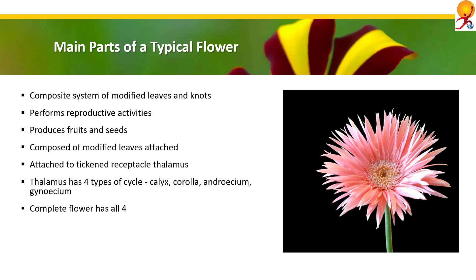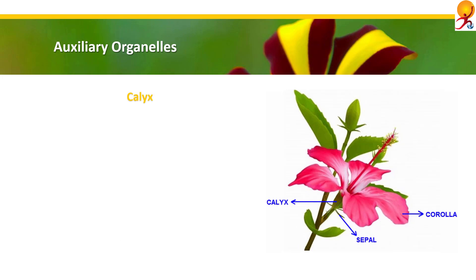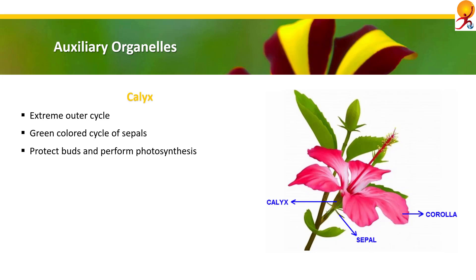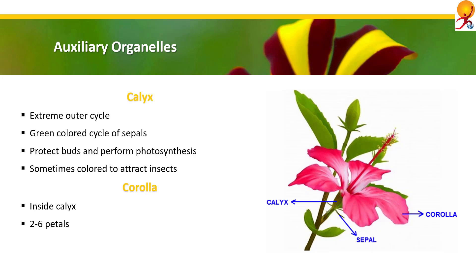The organs calyx and corolla are called auxiliary organelles, while androecium and gynoecium are called necessary organelles. Auxiliary organelles — Calyx: this is the extremely outer whorl of the flower and it's green in color. It's made of sepals. The main work of calyx is to protect the soft parts of buds and perform photosynthesis. In some flowers it becomes colored and its main function becomes to attract insects for pollination.